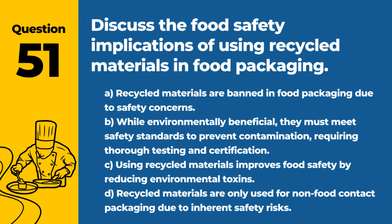Question 51. Discuss the food safety implications of using recycled materials in food packaging. a. Recycled materials are banned in food packaging due to safety concerns. b. While environmentally beneficial, they must meet safety standards to prevent contamination, requiring thorough testing and certification. c. Using recycled materials improves food safety by reducing environmental toxins. d. Recycled materials are only used for non-food contact packaging due to inherent safety risks. Answer: b. While environmentally beneficial, they must meet safety standards to prevent contamination, requiring thorough testing and certification. Ensuring the safety of recycled packaging materials is essential for their use in food packaging.